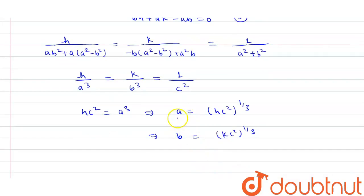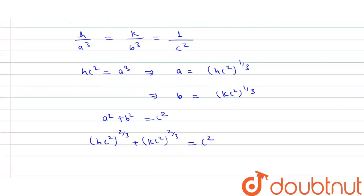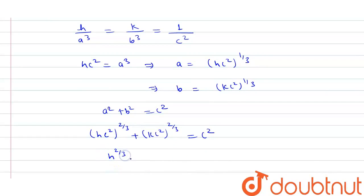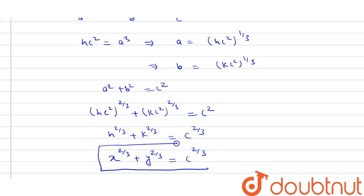Now put the values of A and B into equation 1, which is a² + b² = c². Substituting, we get (Hc²)^(2/3) + (Kc²)^(2/3) = c². This simplifies to H^(2/3) + K^(2/3) = c^(2/3). Substituting back X and Y for H and K, we get x^(2/3) + y^(2/3) = c^(2/3). This is the required equation of the locus of point M.